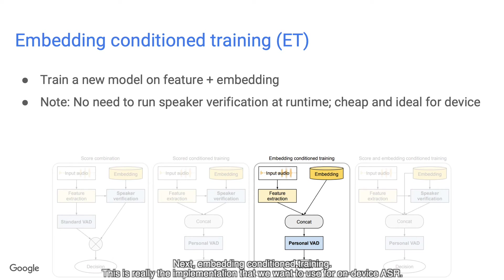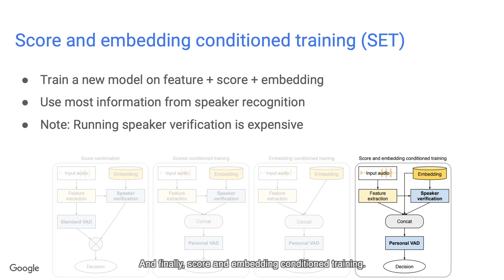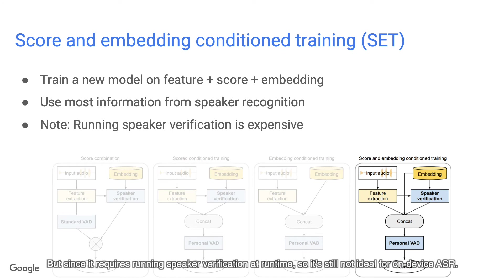Next, embedding-conditioned training — this is really the implementation we want to use for on-device ASR. It directly concatenates the target speaker embedding with acoustic features, and we train a new Personal VAD model on the concatenated features. So the Personal VAD model is the only model we need at runtime. Finally, score-and-embedding-conditioned training concatenates both the speaker verification score and embedding with the acoustic features, using the most information from the speaker verification system and expected to be most powerful. But since it requires running speaker verification at runtime, it's still not ideal for on-device ASR.